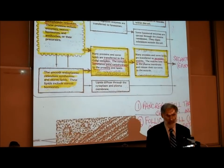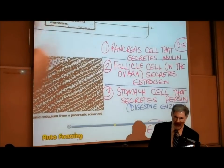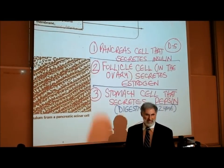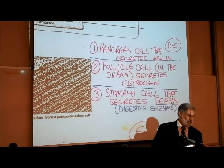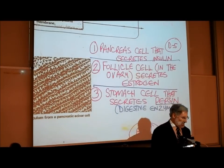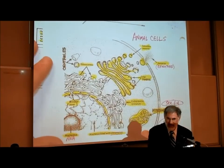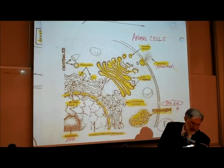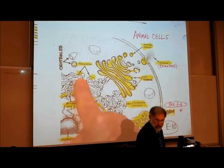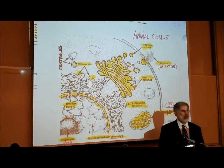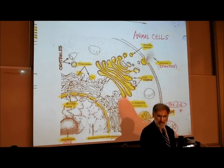Let's give three examples. Example number one: pancreas cells that secrete insulin. If we were looking at a pancreas cell, where would the insulin be made? At the ribosomes of the rough ER, because insulin is a protein hormone. And where would the insulin be temporarily stored? In the Golgi complex.